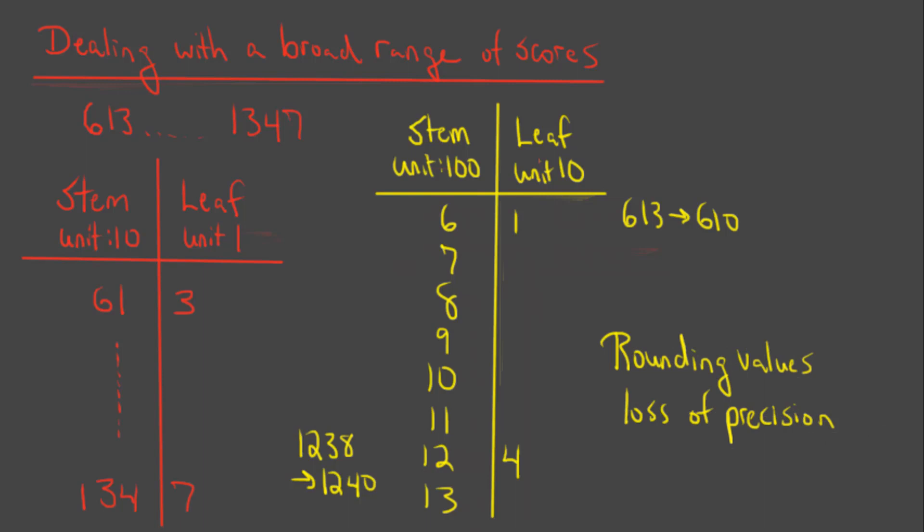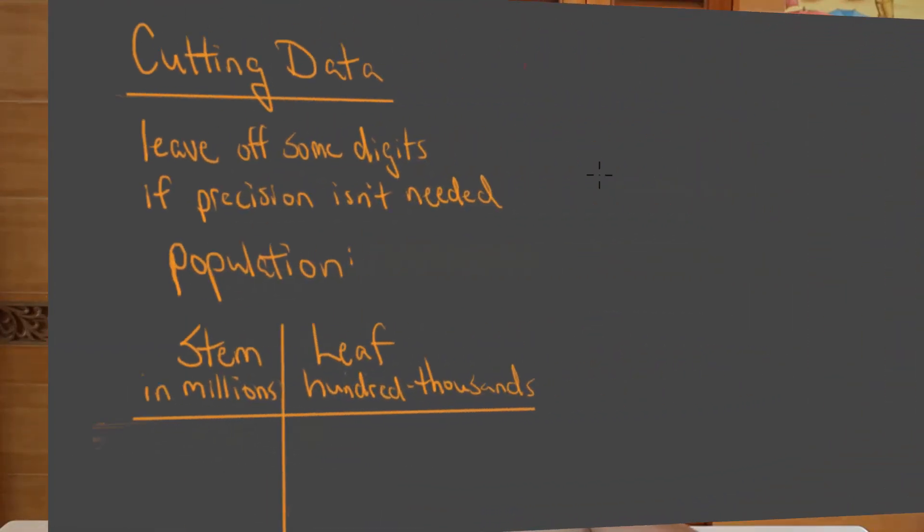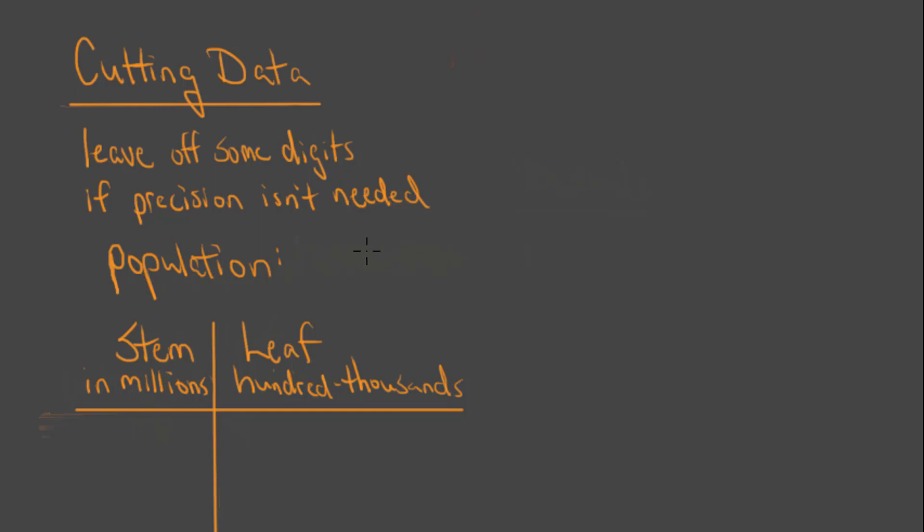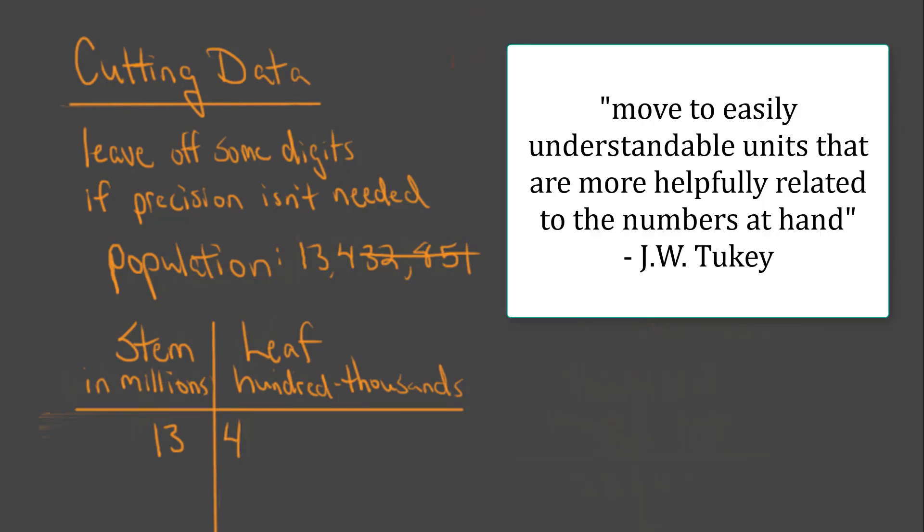This also brings up that when we read stem and leaf displays, we have to look carefully at the units, and if we're making a stem and leaf plot, we need to make sure that we clearly label things to avoid any confusion. If we have data with many places, but we don't actually need to be that precise, then we could engage in cutting rather than rounding. Cutting refers to simply leaving off some of the digits from each response. So if we have really large numbers like populations of countries, we might decide to cut some of the final digits rather than trying to include them in our stem and leaf display. If we had a value like 13,432,851, we might simply cut the last five digits and present this with a stem representing millions and a leaf for hundred thousands. In this case, we're only keeping detail to the level of hundreds of thousands, but for something like country populations, more precision may not be necessary. Tukey wrote that our goal is to move to easily understandable units that are more helpfully related to the numbers at hand. We don't want to round or cut values if it means losing important information, but if that level of precision is unnecessary, then rounding or cutting might be clearer.